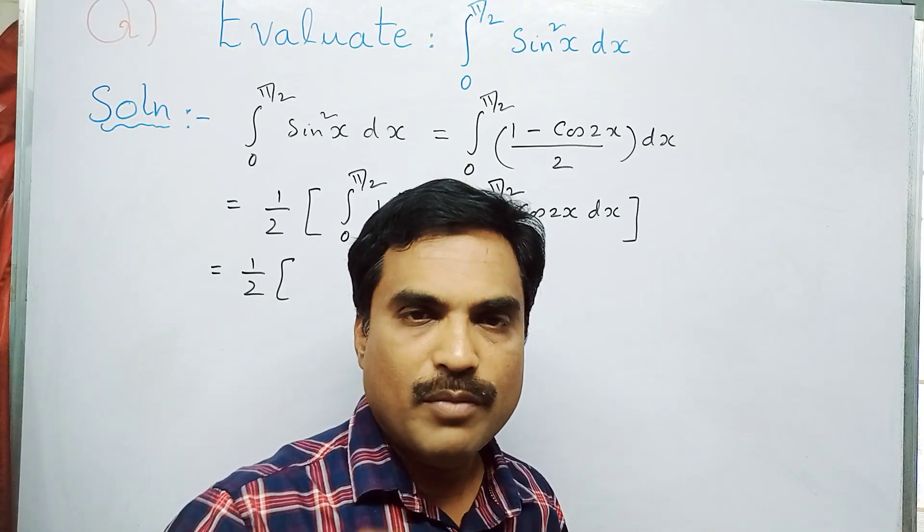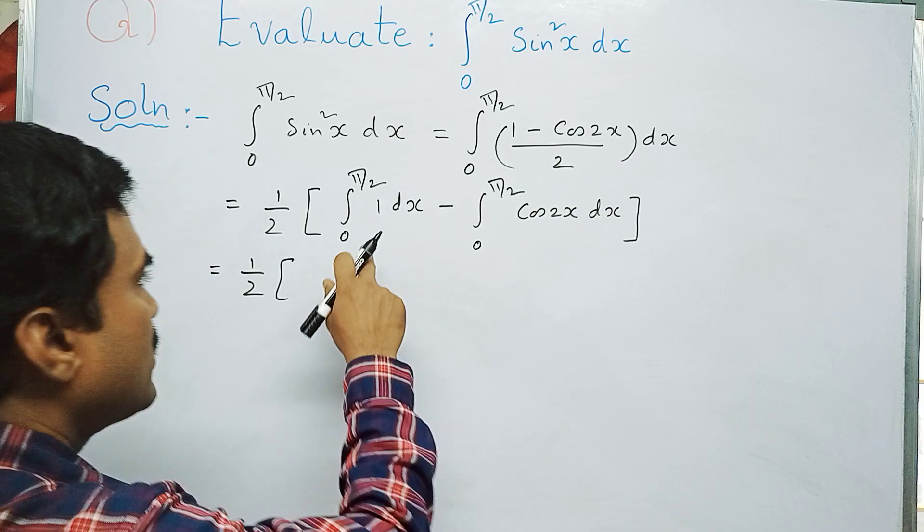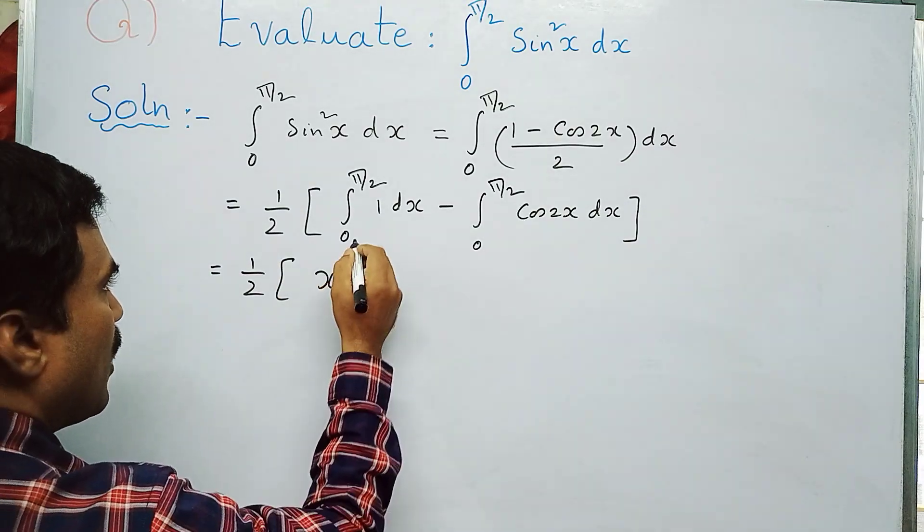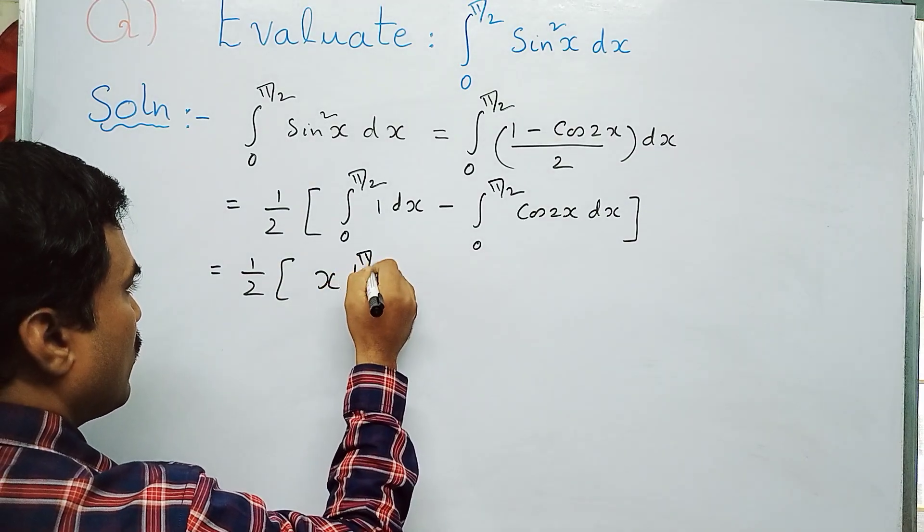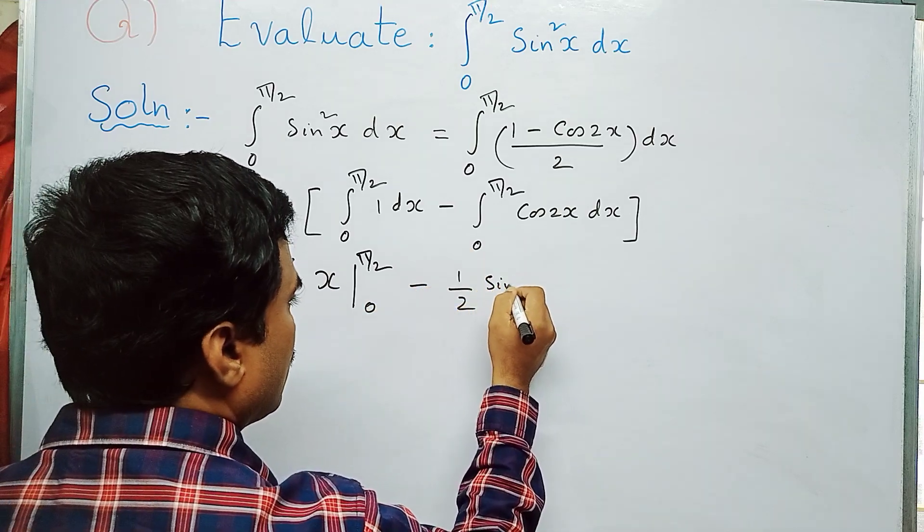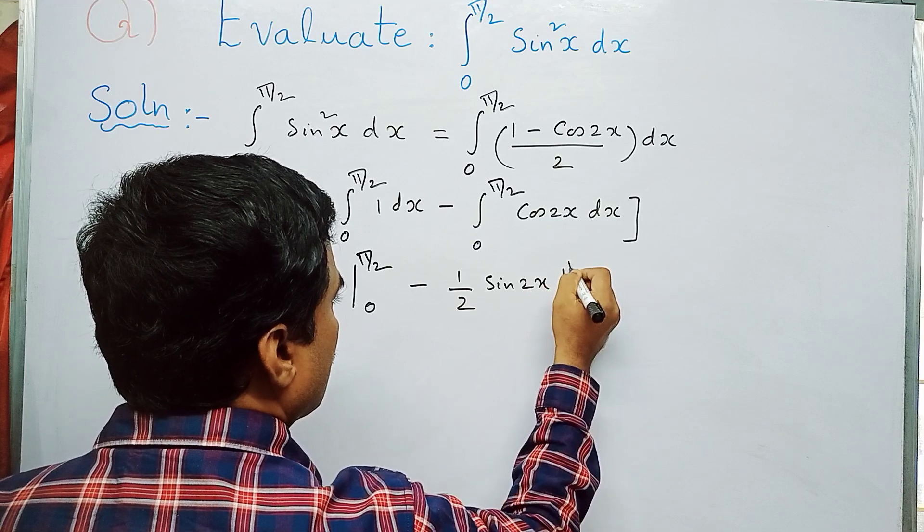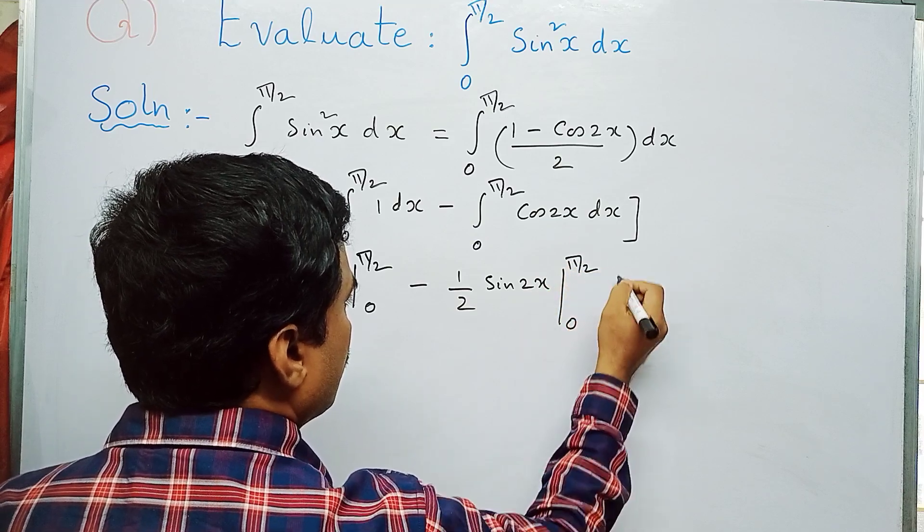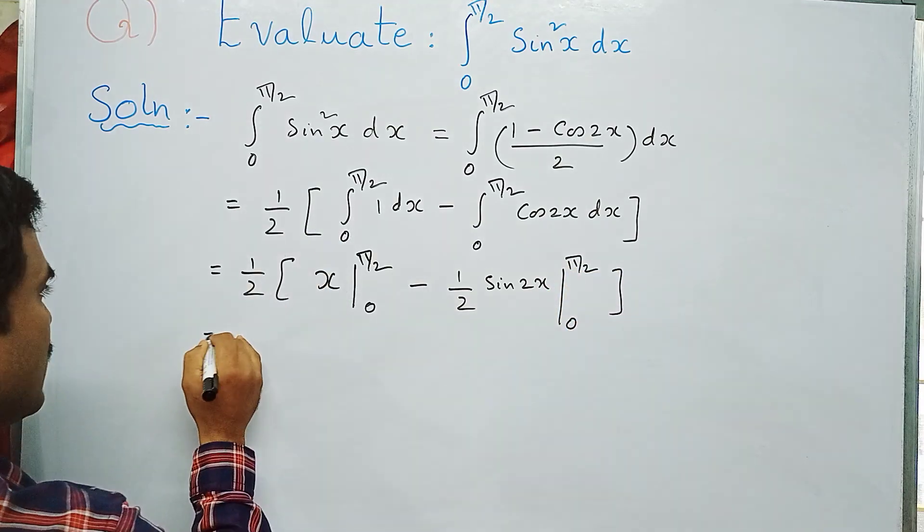Apply the limits π/2 and 0. This equals 1/2 times [x evaluated from 0 to π/2 minus (1/2)sin2x evaluated from 0 to π/2]. Substituting the upper limit first: 1/2[π/2 minus 1/2·sin(2·π/2)].